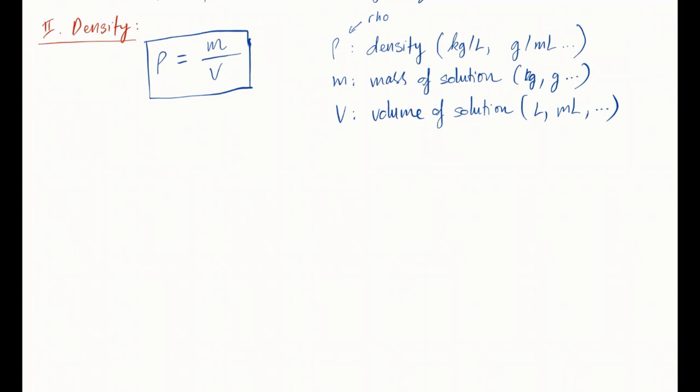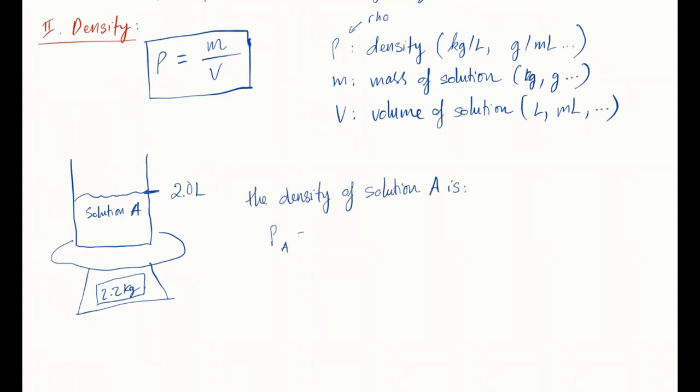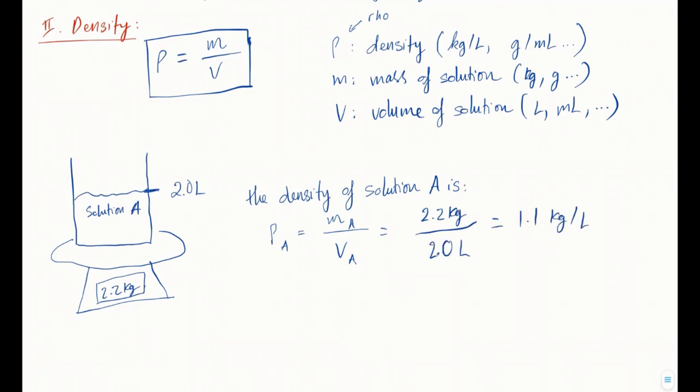So say you have a solution A. Its volume is 2 liters, and the mass of this whole solution altogether, excluding the container of course, is 2.2 kilograms. Then the density of this whole solution is simply mass divided by volume, equal to 1.1 kilograms per liter. So it means that every liter of this solution weighs 1.1 kilograms.